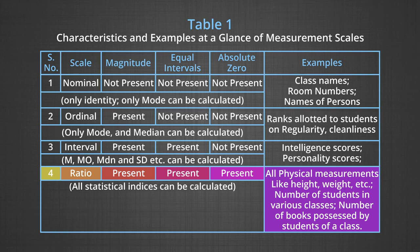The last and highest type are ratio scales. In these scales, magnitude is present, equal intervals are present, and absolute zero point is present — all three important ingredients of measurement are present. Hence, these are the highest scales. On ratio scales, we can use all types of statistical indices: mean, mode, median, standard deviation, and coefficients. We can perform all mathematical calculations. Examples include all physical measurements like heights, weights, number of students in various classes, and number of books possessed by students.